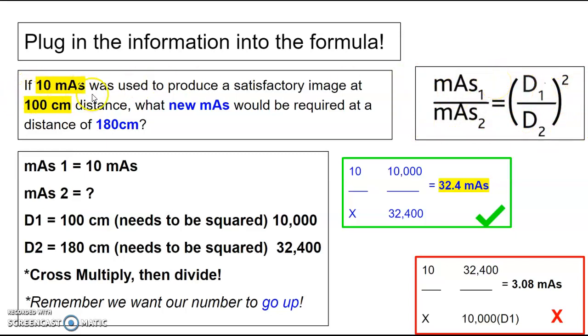So mAs 1 is going to be 10 mAs. Distance 1 is that 100 centimeters. I'm looking for a new mAs at 180 centimeters. So I plug in, I like to plug mine in in this list first, and then put it into my formula, whichever way works for you. So my mAs 1 is 10 mAs, so that goes up here. I don't have a mAs 2, so I put an X here. Distance 1 was 100 centimeters, but that has to be squared. So that comes out to 10,000. Distance 2 is 180 centimeters, but again, that has to be squared. Don't forget to square those numbers, or you won't get a number that makes sense.